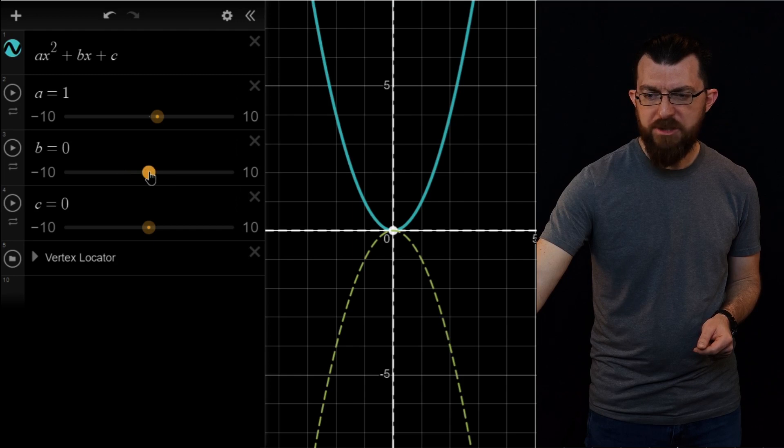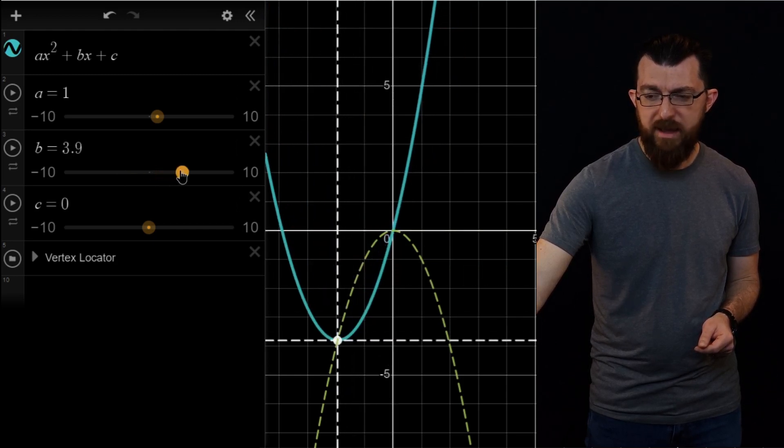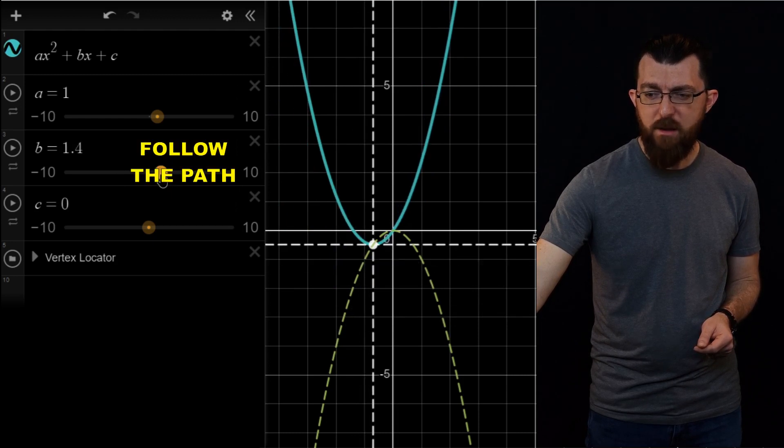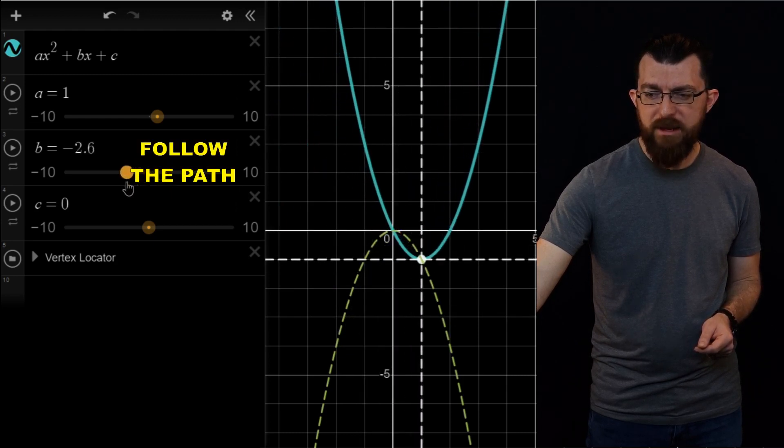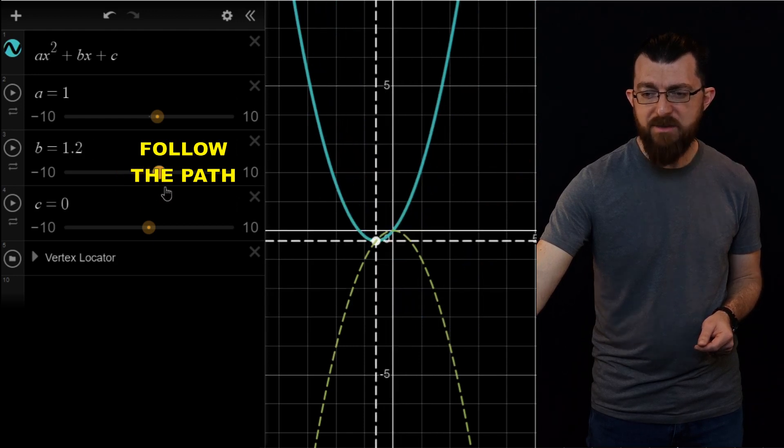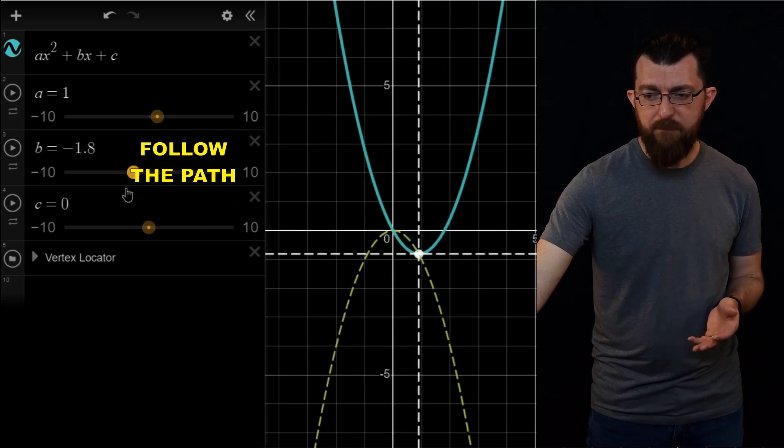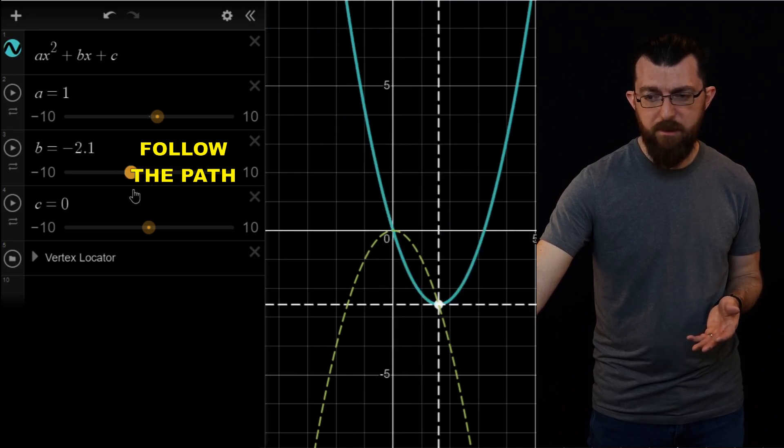Now watch what happens when I change B. That vertex, as you can see it's located in that crosshair, follows that path. It looks like there is some hidden path that the vertex is traveling along as you slide B up and down. That's not exactly obvious, but if you dig a little deeper, there you find it.